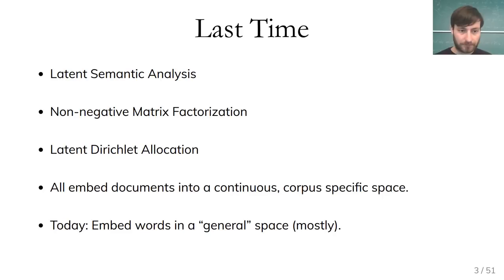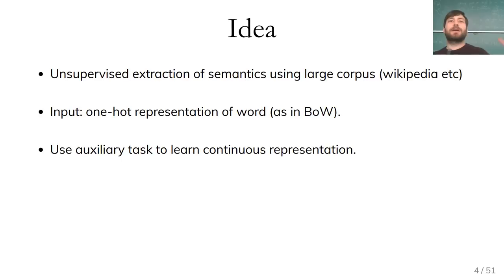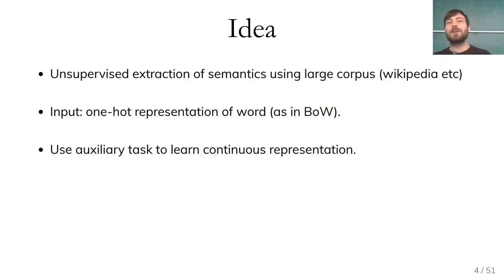We will use an unsupervised feature extraction method using a large enough corpus — many news articles, Wikipedia, or a collection of books. We start with representing every word using a one-hot representation or bag-of-words approach, modeling each as a discrete entity, but then we learn a continuous representation for each word that is more semantic. We use what I'll call an auxiliary task to learn this continuous representation.